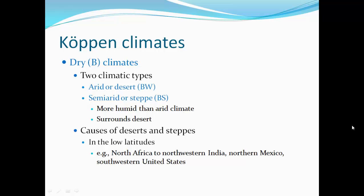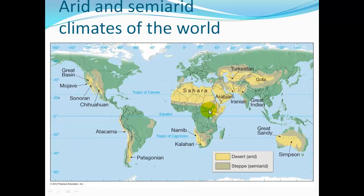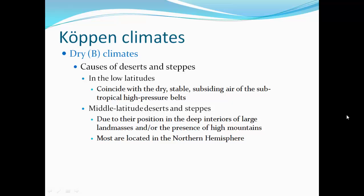Causes of deserts and steppes: in the low latitudes — for example, North Africa, Northwestern India, Northern Mexico, and Southwestern United States — we find the Sahara, Arabian, and Gobi deserts. These tend to be very continental, so rainfall is depleted before the air arrives. Others are right on the equator or are rain shadow deserts in the center of a continent. Low-latitude deserts coincide with dry, stable, subsiding air and subtropical high pressure belts. Mid-latitude deserts and steppes are due to deep continental interiors and/or high mountains, and most are located in the Northern Hemisphere.